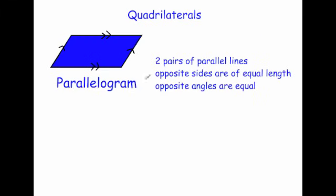If a shape has two pairs of parallel lines, it's a parallelogram. The top line is parallel to the bottom line, and the right-hand line is parallel to the left-hand line. The opposite sides are of equal length, and the opposite angles are equal — this angle here would be the same as the one diagonally opposite, and the top right angle would be the same as the bottom left.